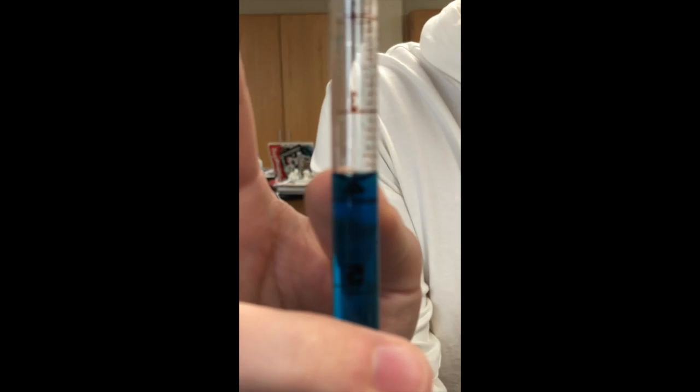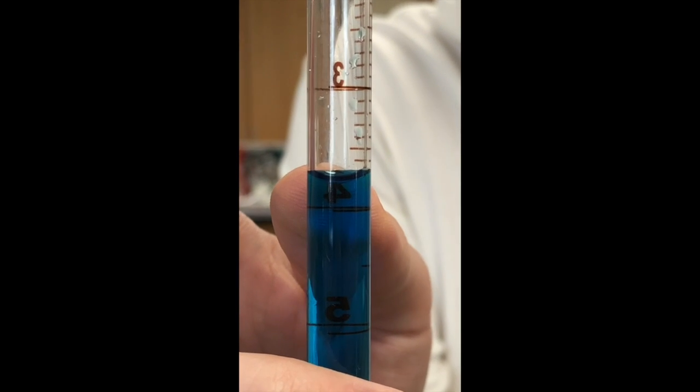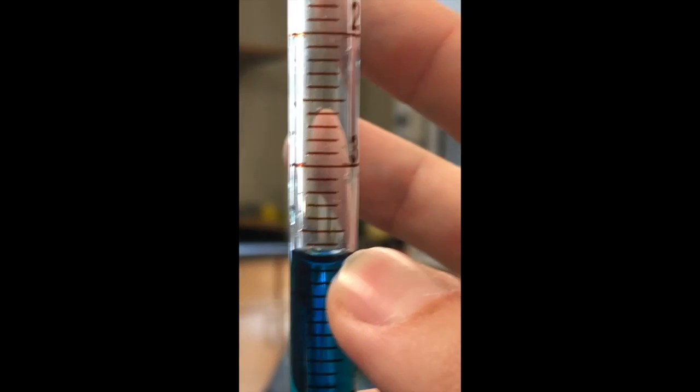As you can see, Garrett has successfully measured out 3.7 milliliters as seen by this meniscus on the Mohr pipette.